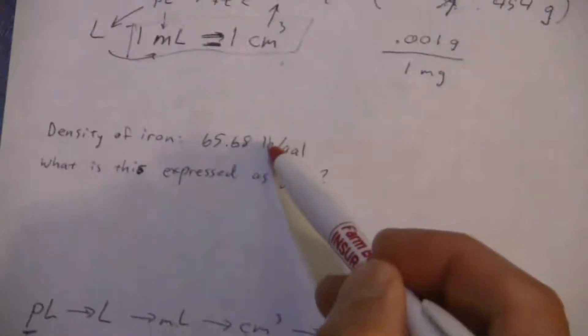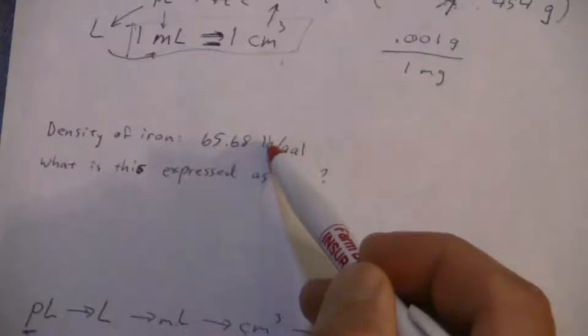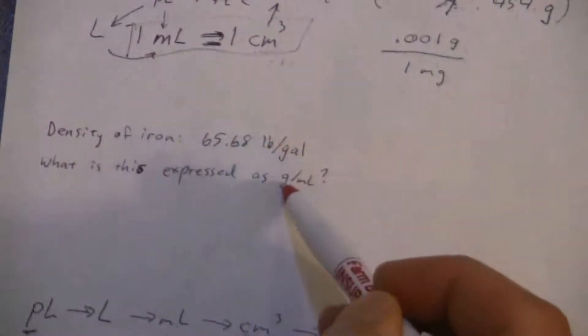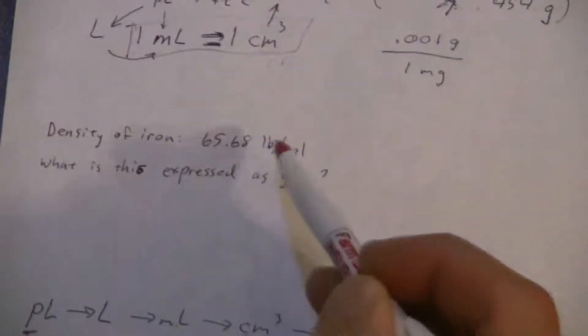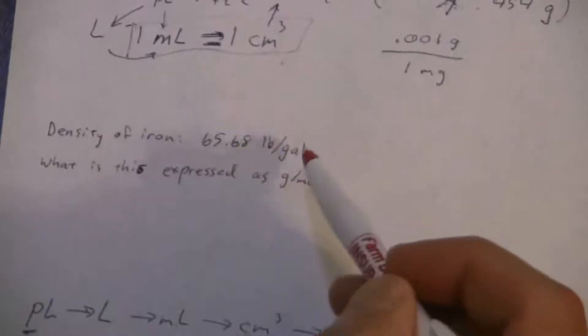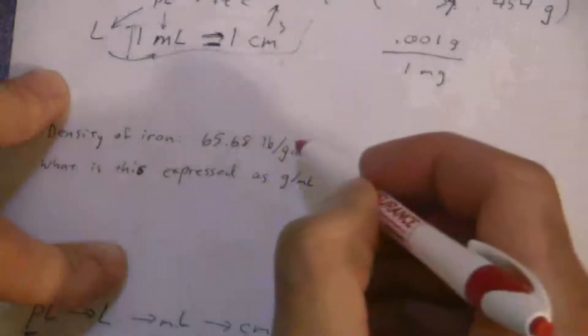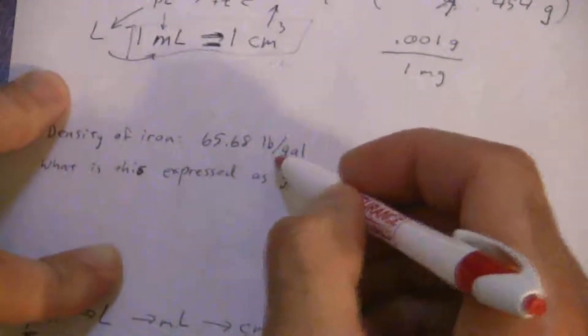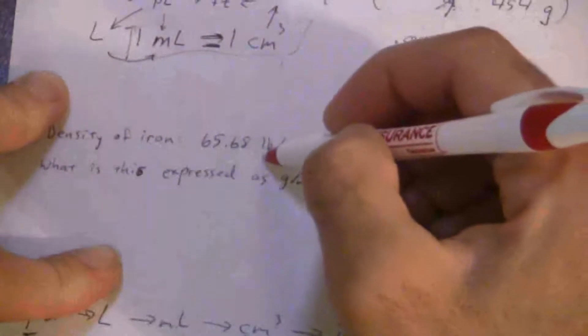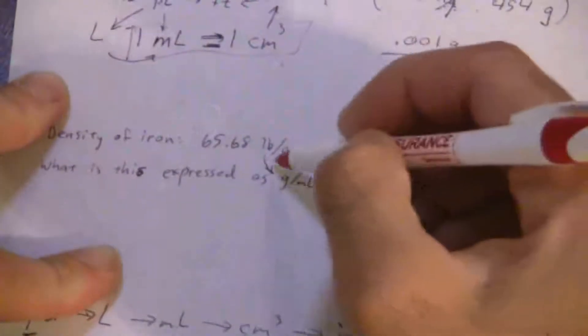We can convert the weight or the mass units to mass units, so pounds to grams, and then the volume to volume units, the gallons to milliliters. I know the conversion between pounds and grams - that's just one step, I used that one up in the first problem.